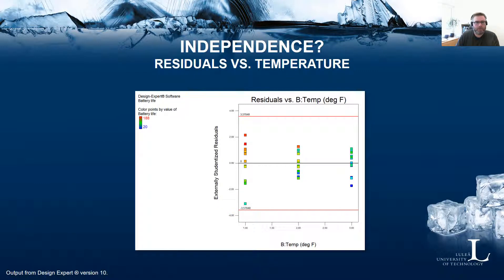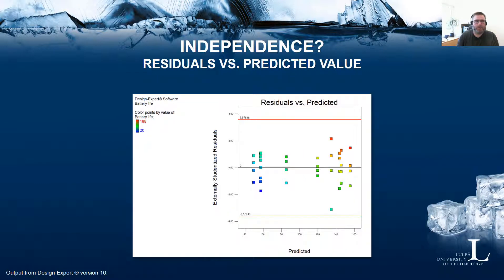We can also check independence by looking at residuals versus predicted value. Here we want to see that the variability in the residuals does not seem to be affected by the predicted value — whether it's a high or a low predicted value should not affect the precision of the model predictions.